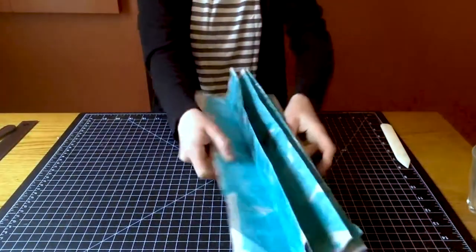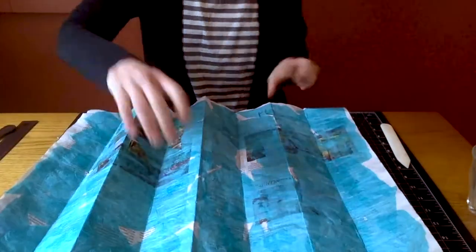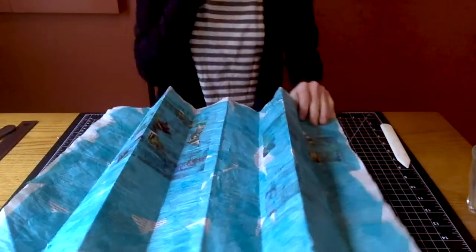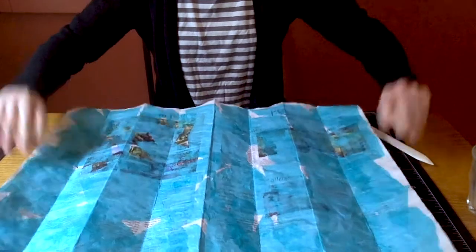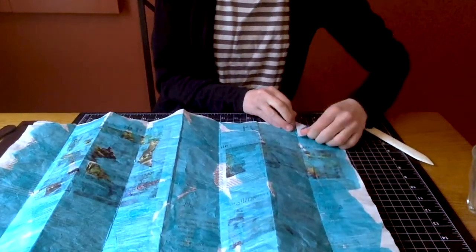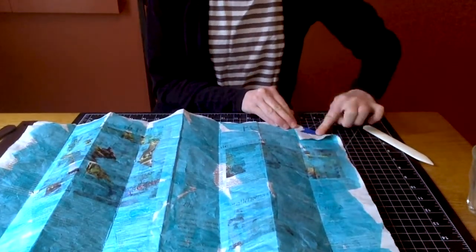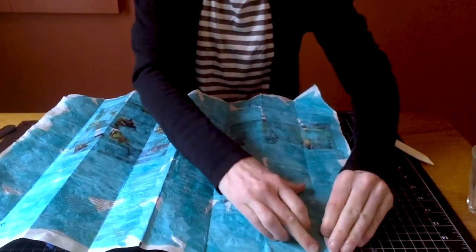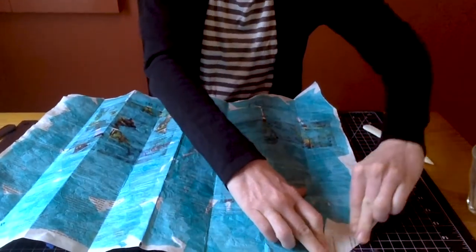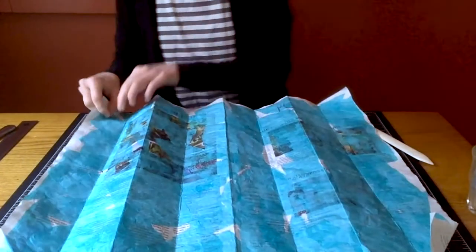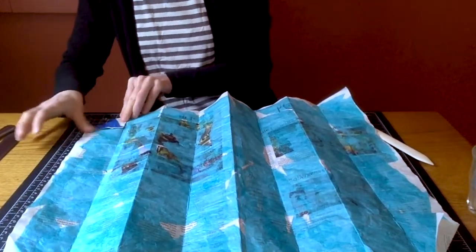Okay, that gives us eight panels. And then we're going to fold all of our corners in at a diagonal to that very first and very last valley fold.